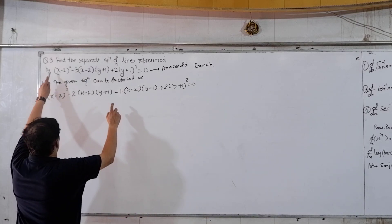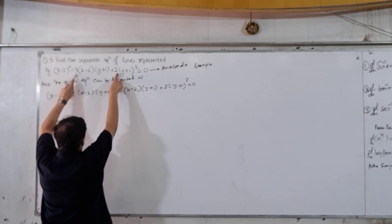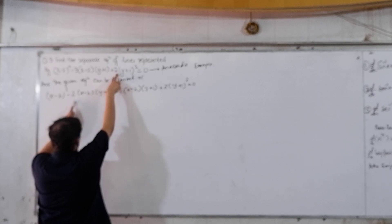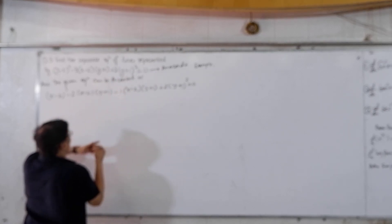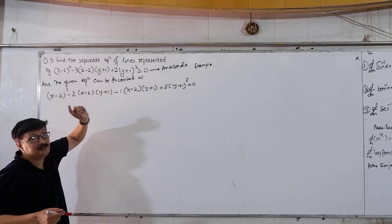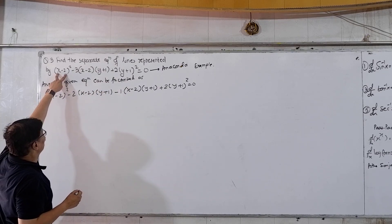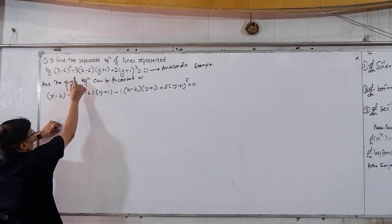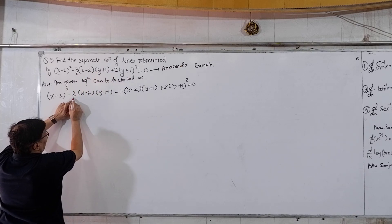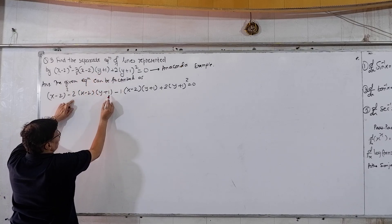We noted here: one factor is here, and its option is 2 here. So minus 2 times one term, or minus 1 times the other. So the given equation can be factorized as: (x minus 2) whole square, then minus 3 times that term — write it as minus 2 times (x minus 2)(y plus 1).